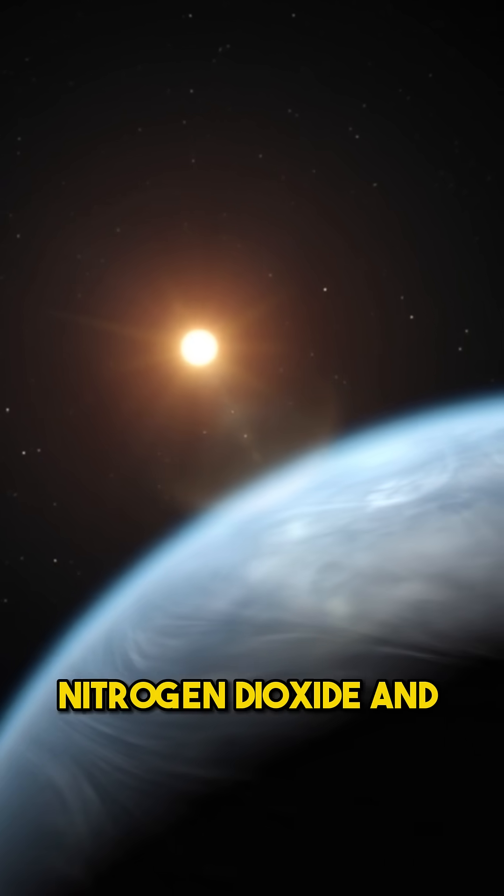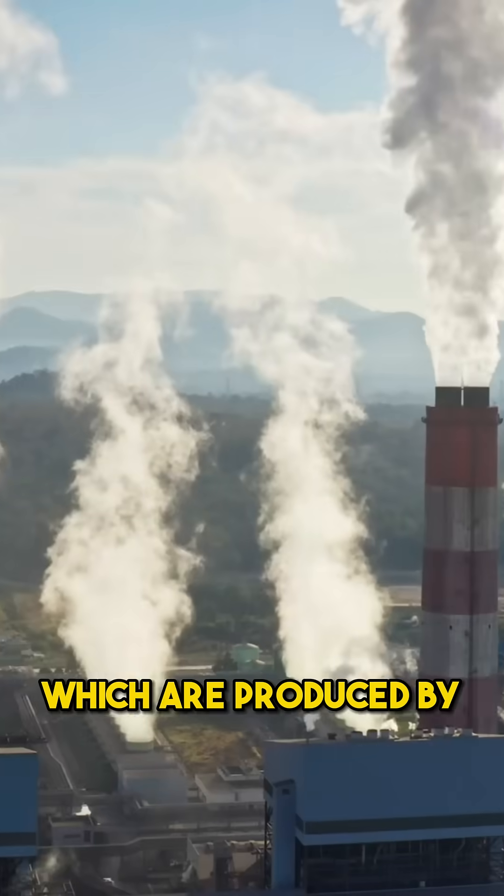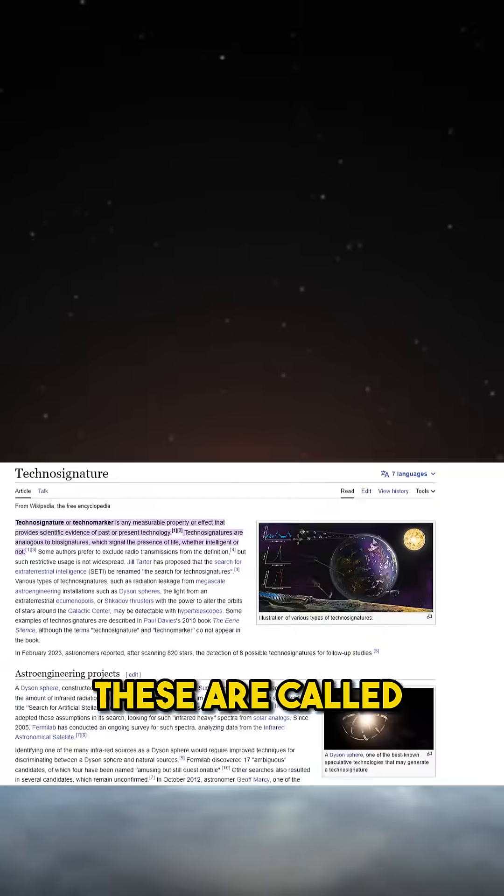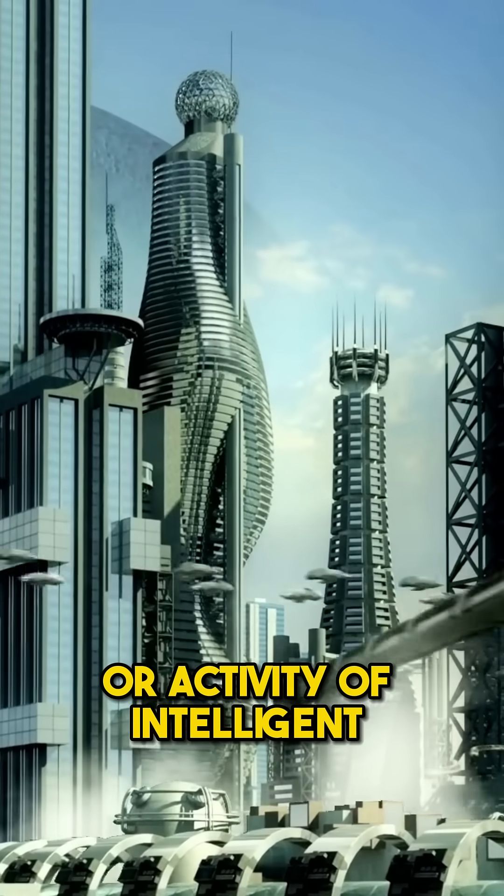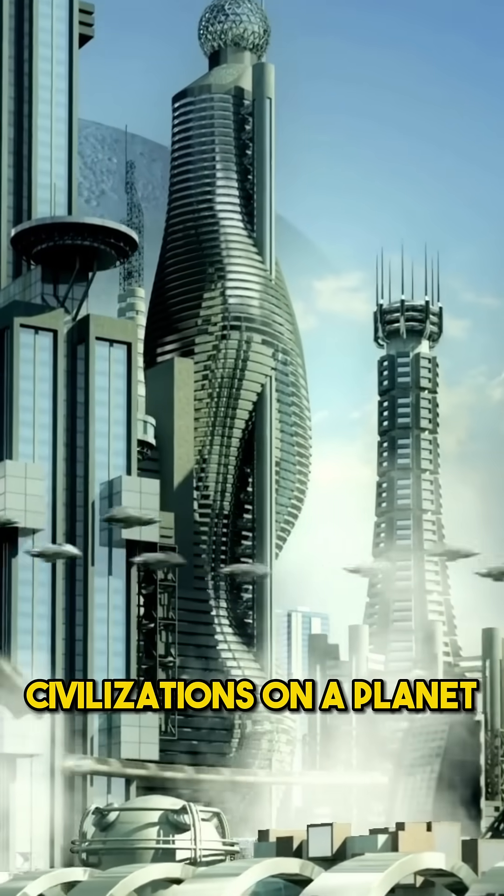Webb also found nitrogen dioxide and chlorofluorocarbons, which are produced by human activities on Earth. These are called technosignatures, and they indicate the presence or activity of intelligent civilizations on a planet.